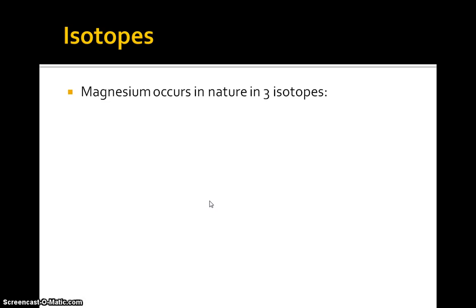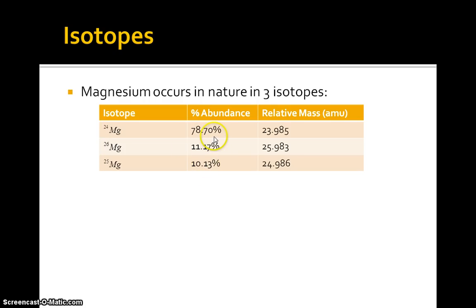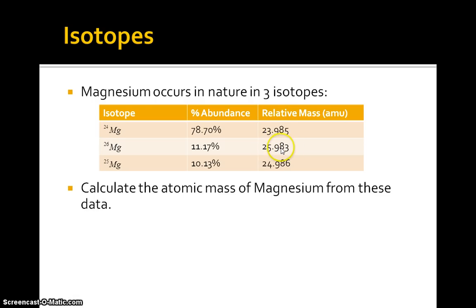Magnesium occurs in nature as three isotopes. Here's a table showing magnesium-24, magnesium-25, and magnesium-26. They're not written in order of mass number — they're ordered by percent abundance. The most common is magnesium-24. The relative mass in atomic mass units is given in accurate detail: 23.985 for magnesium-24.